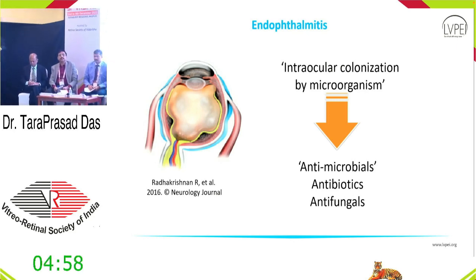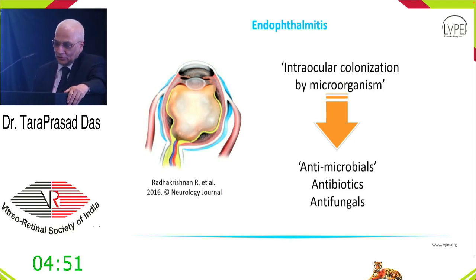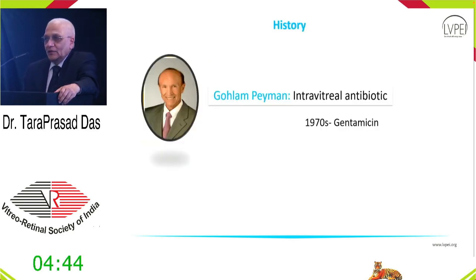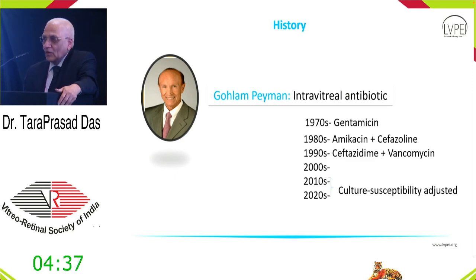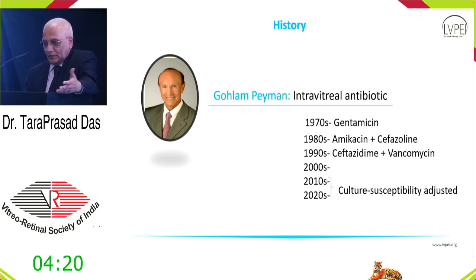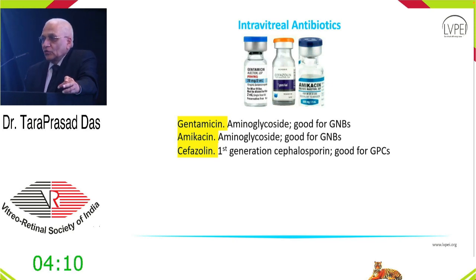In endophthalmitis — the colonization of bugs inside the eye — we have antimicrobials: not just antibiotics, but also antifungals and antivirals. Historically, five decades ago treatment started with volume-based regimens, and a lot has changed since. We've changed from one antibiotic to another — from gentamicin to cefazolin, ceftazidime, and amikacin. Today, with efficient microbiology services, we always think about culture-susceptible organisms. The three key drugs from training days: gentamicin and amikacin — both aminoglycosides, good for gram-negative bacilli — and cefazolin for gram-positive cocci.